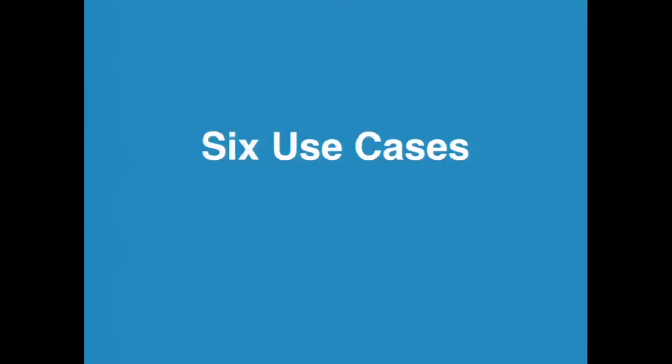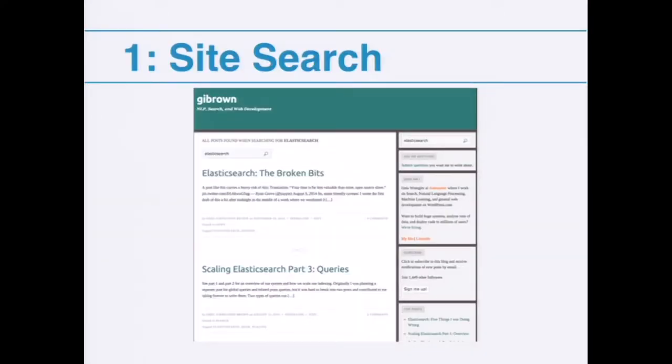So on to our use cases. The first one is site search. I think everybody in the room probably has complaints with built-in WordPress site search — it's complained about regularly. Lots of smart people have tried to work on it, but the problem is really that MySQL is not built for that. It's hard to scale and hard to get really good relevant results. We need to move to some other technology, and Elasticsearch really enables us to do that.